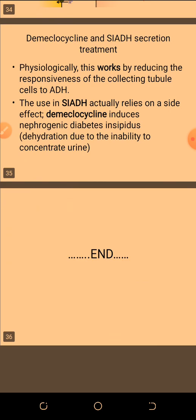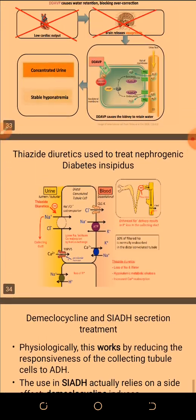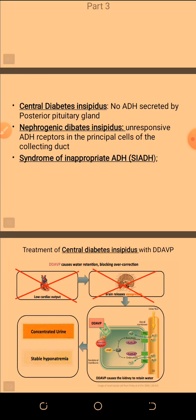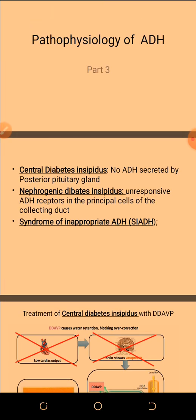In summary: central diabetes insipidus involves no ADH secretion at the level of the posterior pituitary gland; nephrogenic diabetes insipidus involves unresponsiveness of ADH receptors in the principal cells; and syndrome of inappropriate ADH involves excessive secretion of ADH. That concludes our discussion of oxytocin and antidiuretic hormone.